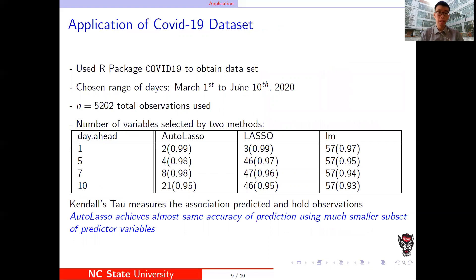For the last of our project, we did an application of COVID-19 dataset. We used our package COVID-19 to obtain the dataset from March 1st to June 10th of 2020. We compared the number of variables selected by three methods: the AutoLasso, classical Lasso, and the linear regression model.